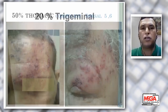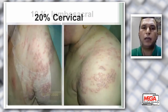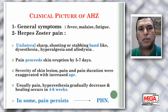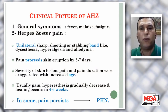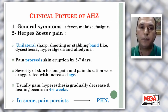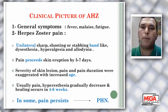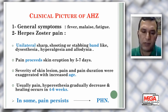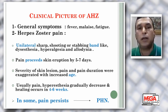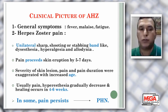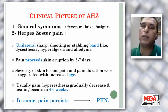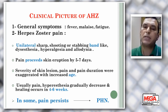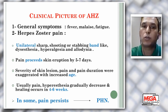20% are trigeminal, 20% are cervical, and 10% are lumbosacral. Clinical presentation of acute herpes zoster includes general symptoms such as fever and malaise. The pain is unique — it is unilateral, shooting, stabbing pain that precedes skin eruption by five to seven days. Severity of skin lesions, pain, and pain duration are exaggerated with increasing age. Usually pain and hyperesthesia gradually decrease and healing occurs in four to six weeks. In some cases, pain persists, producing what is known as post-herpetic neuralgia.